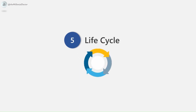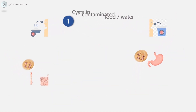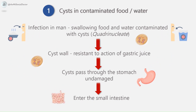The next topic is the life cycle. Man is the only host for Entamoeba histolytica. The life cycle can be simplified into four stages: first, cysts in contaminated food and water; second, excystation in the small intestine; third, multiplication by binary fission; and fourth, encystation in the large intestine. Man acquires infection by swallowing food and water contaminated with cysts. As the cyst wall is resistant to gastric juice, the cysts pass through the stomach undamaged and enter the small intestine.